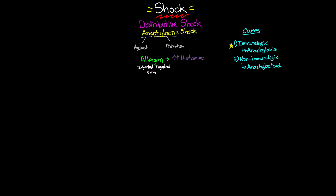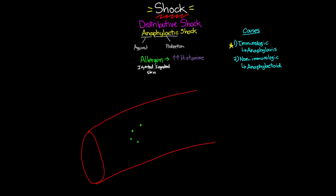Let's talk about what's actually happening inside the body with these reactions. We'll draw out a blood vessel. With the immunologic reaction — anaphylaxis — you end up with an allergen entering the bloodstream. The first time your body sees this, it interacts with a B cell. The B cell's purpose is to recognize the allergen and create proteins called antibodies, also referred to as IgE.